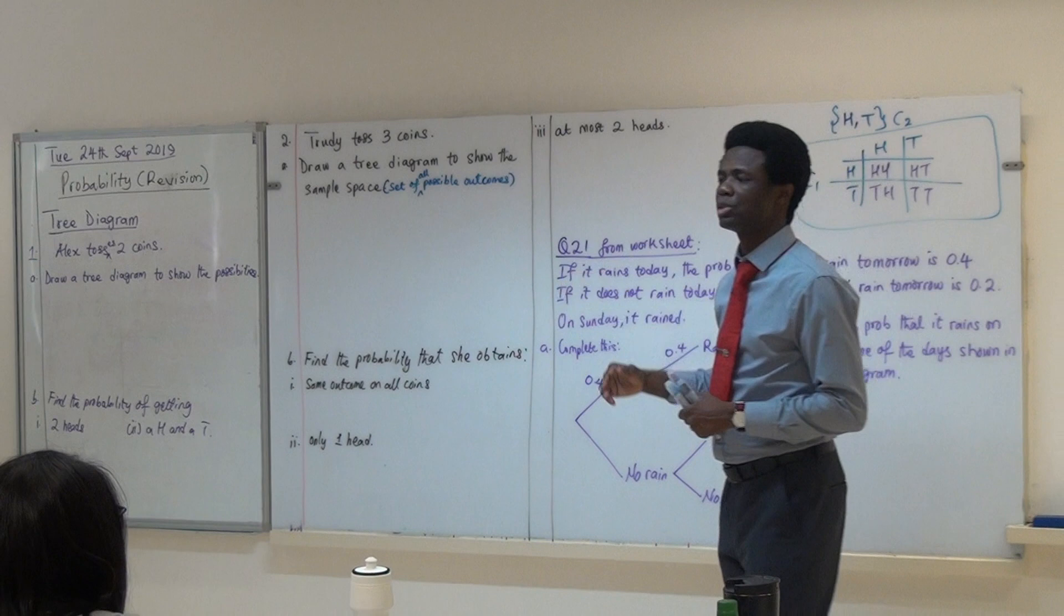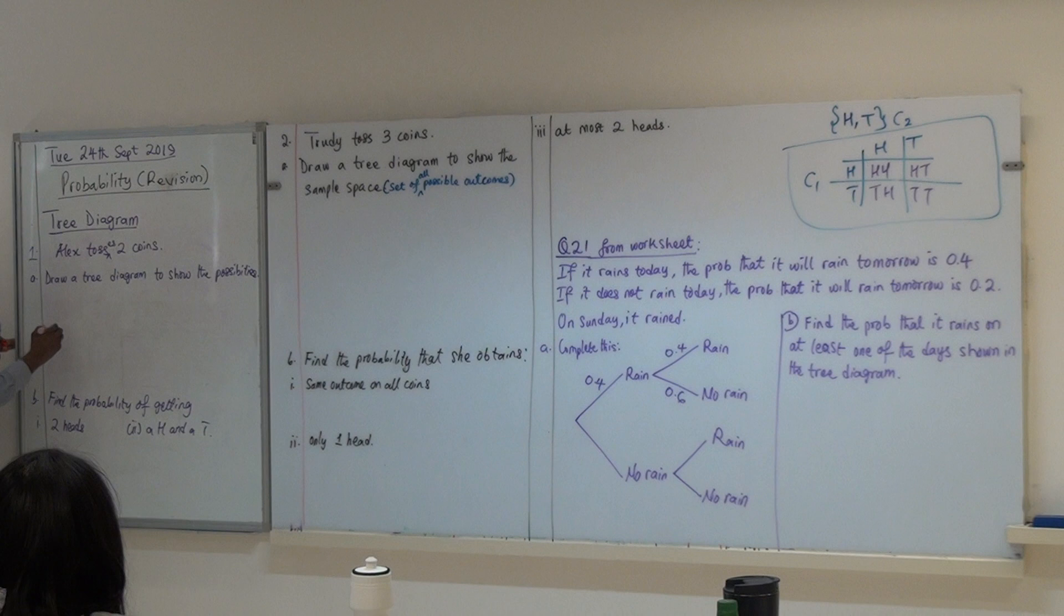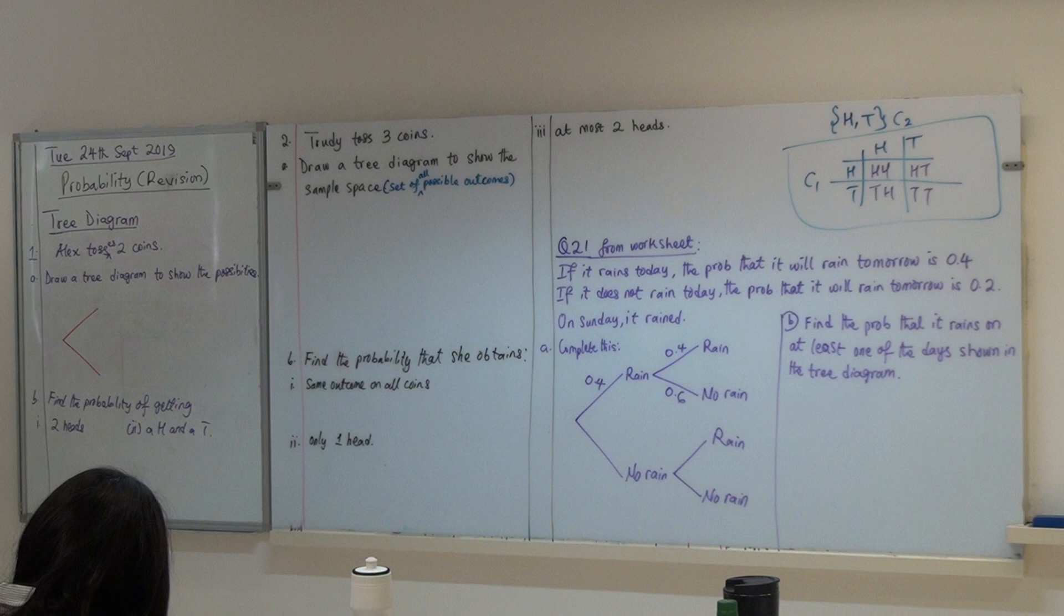But we don't have to do this with the table. We can use the tree diagram. And the tree diagram looks like this. So, Alex tosses two coins. So this is how you begin. You begin by saying, for the first coin, the first coin will be, let me put it this way,